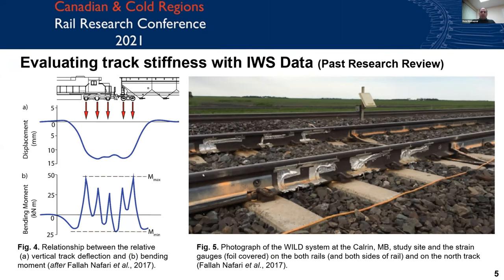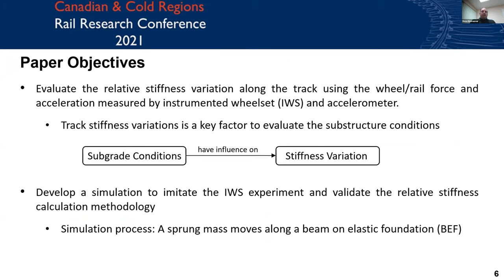Based on past research conducted at CAR, there is a clearly strong relationship between the generation of track geometry defects and subgrade condition, especially subgrade stiffness. The study quantifies the impact of subgrade stiffness and its variation on track geometry. Another study shows the magnitude of bending moment is strongly related to the stress generated in the rail as the train passes and also to the fatigue of the rail. The objective of the presented paper is to evaluate relative stiffness variation along the track using IWS data and accelerometer measurements. The main assumption is that track stiffness variation is a key factor to evaluate the substructure condition.